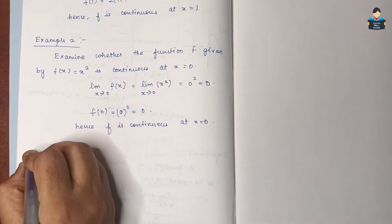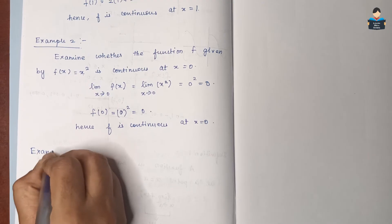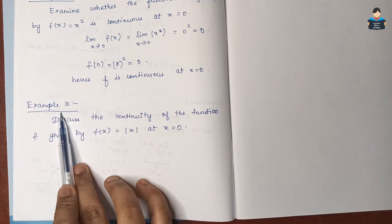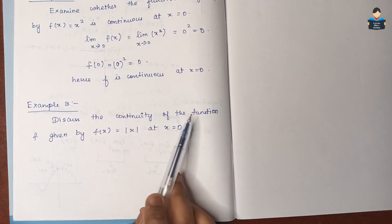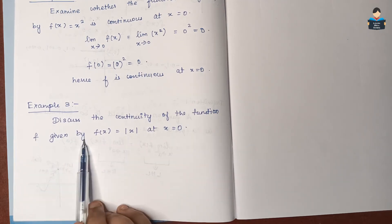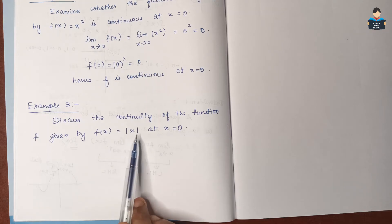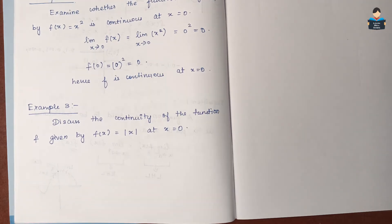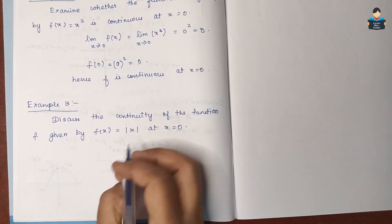Next, Example 3: discuss the continuity of the function f given by f(x) = |x| at x = 0. For the modulus function: